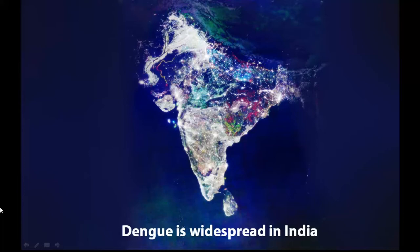It is reported that 18 states and Union territories since 1996, with about 450 million population, are at risk. During 2006, there were 12,317 cases and 184 deaths due to Dengue in India.